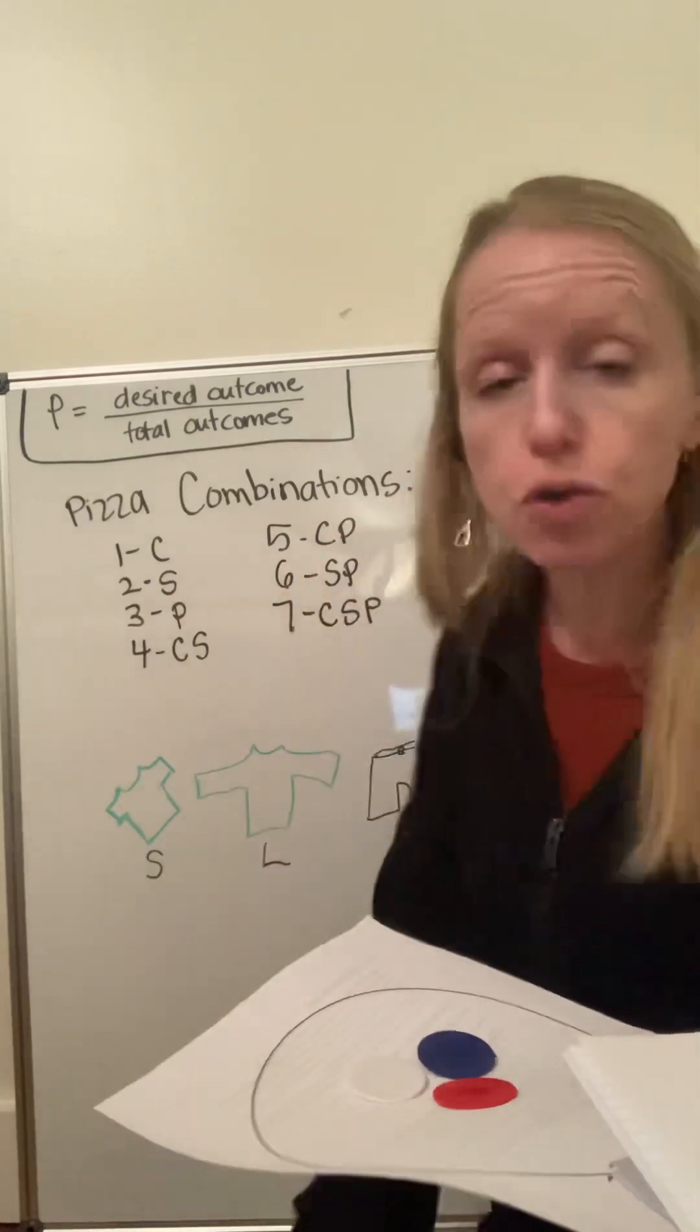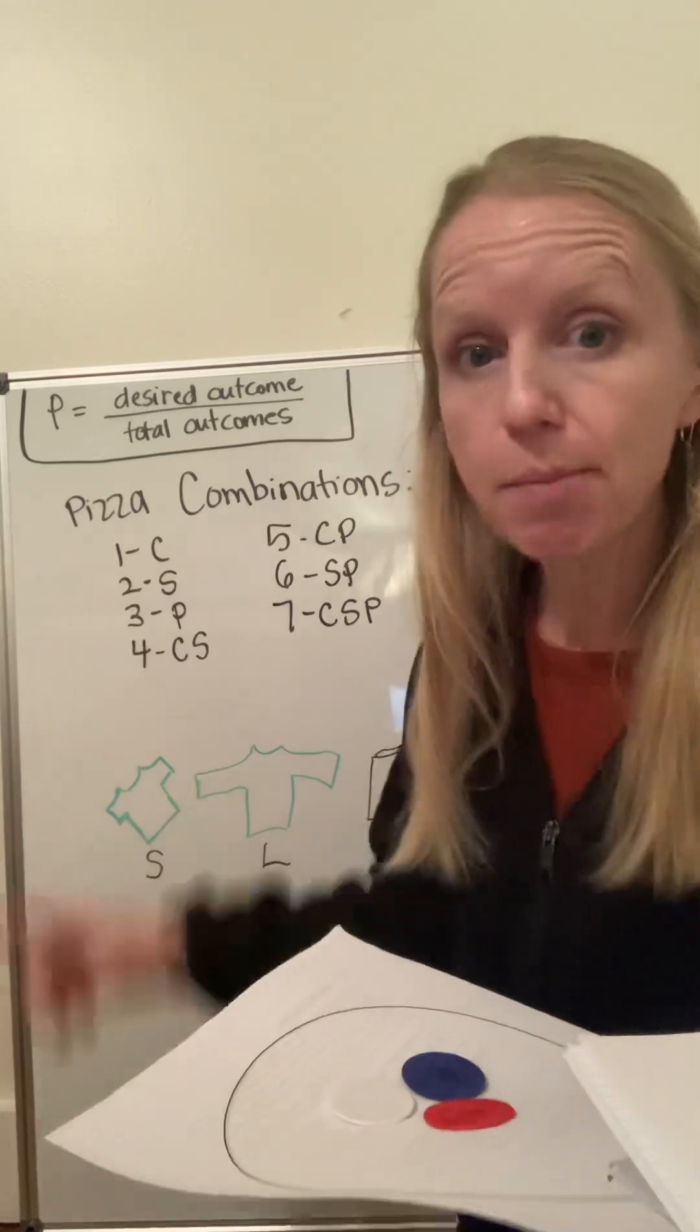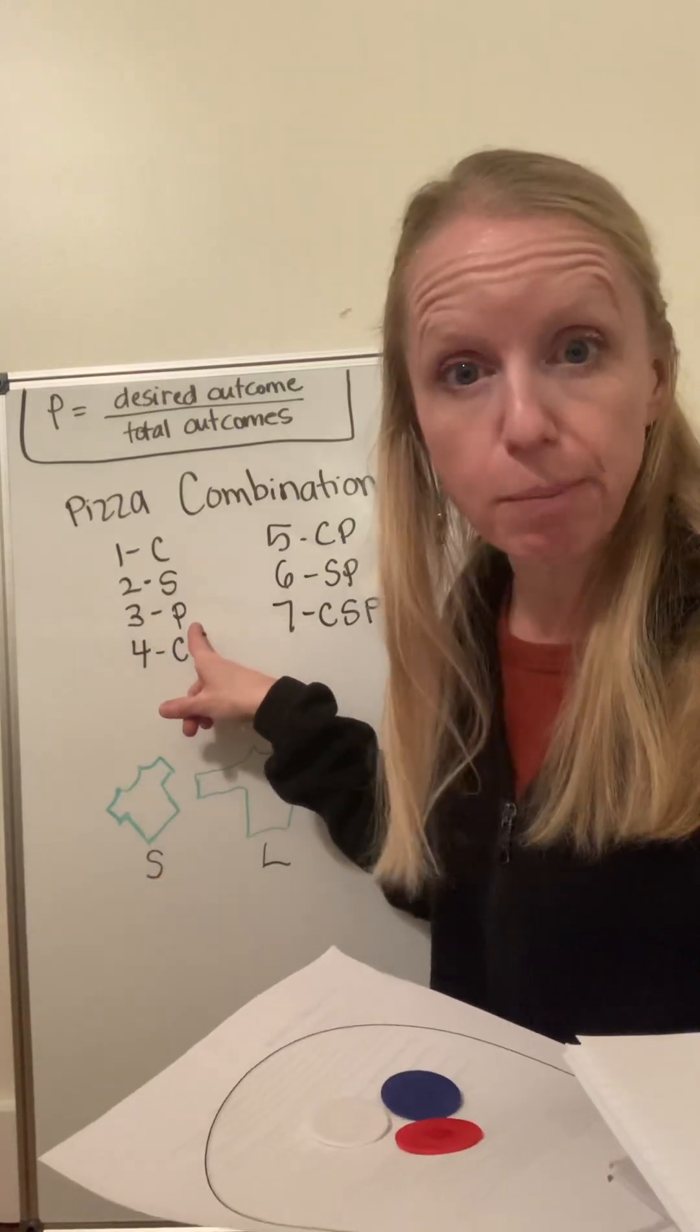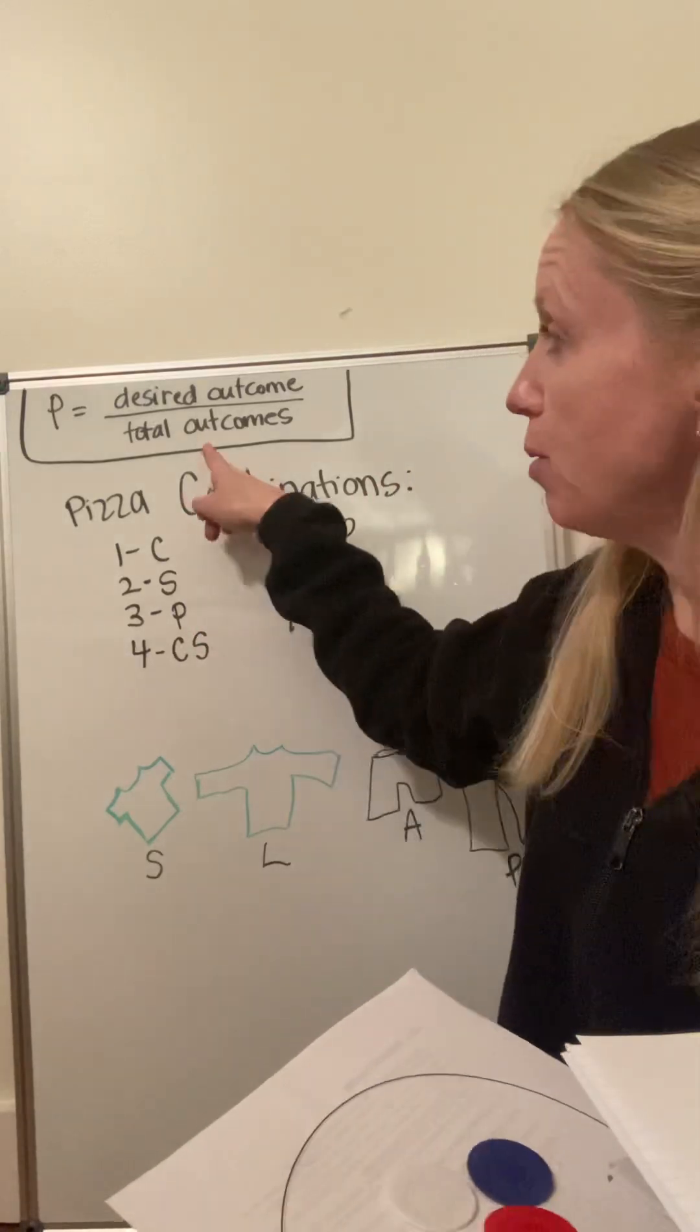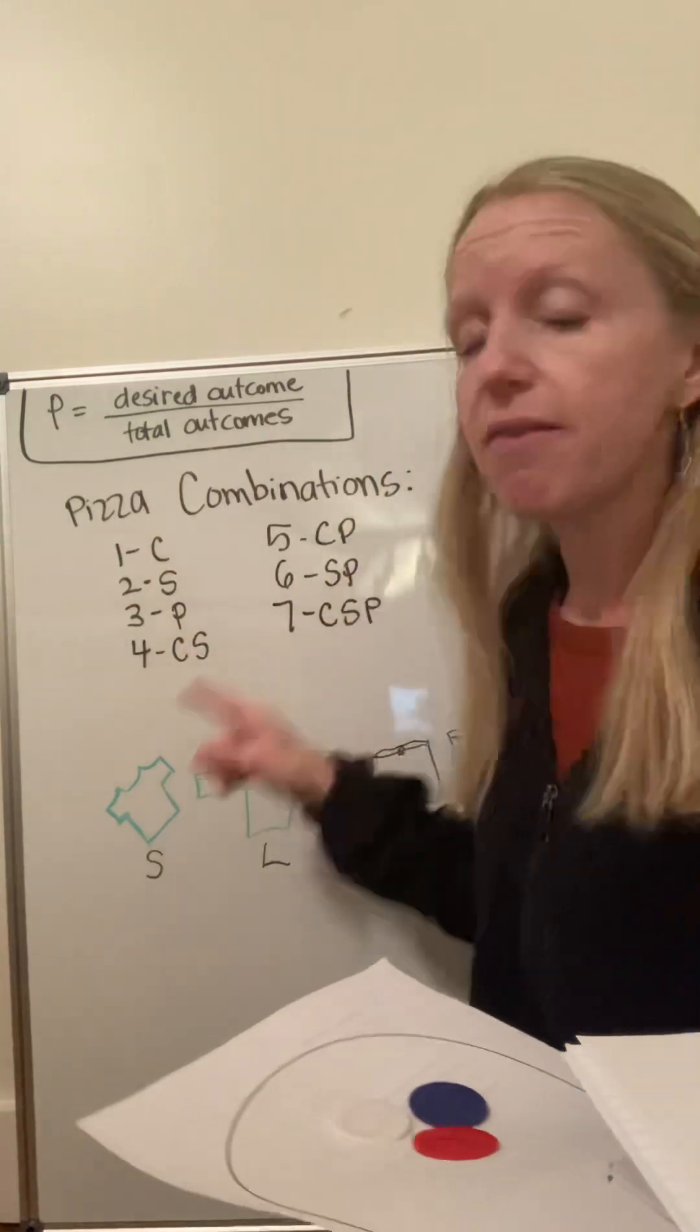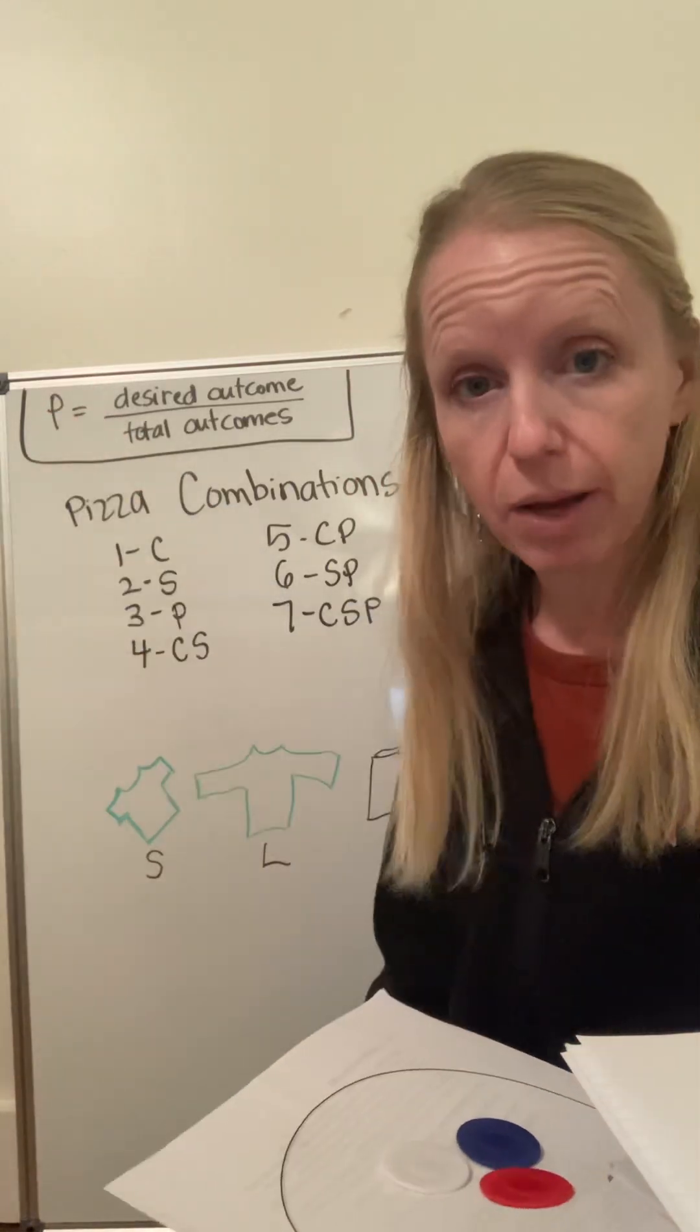And which pizza would you pick? And I personally would probably just do peppers. And so the probability that I'm going to walk into the pizza place without ordering, and they're going to hand me a pizza with just peppers, is one out of seven. Again, probability is your desired outcome. For me, that would be a pizza with peppers, out of the total possible outcomes, which be seven different combinations of pizza ingredients. So again, probability, desired outcomes, over your total possible outcomes.